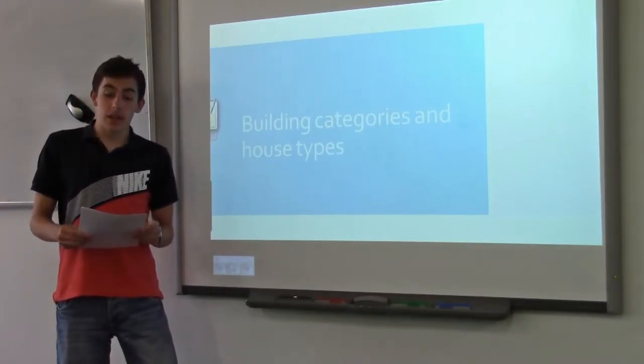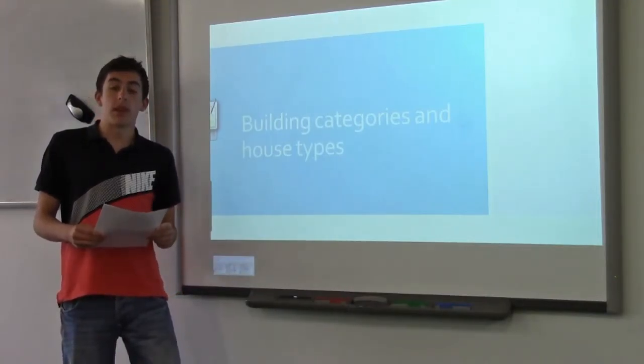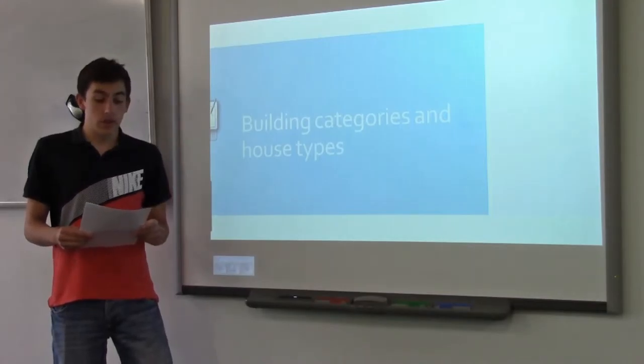Of the approximate 27 million households that are residing in the UK, there are five main general types that are used by both professional organisations that work in the housing industry and also by the general public.